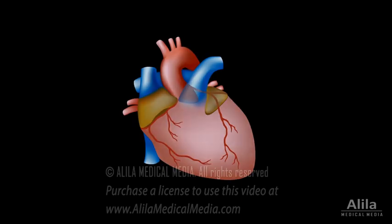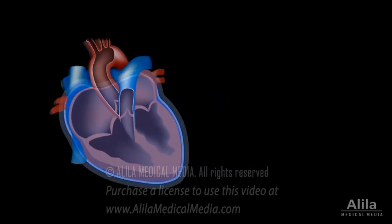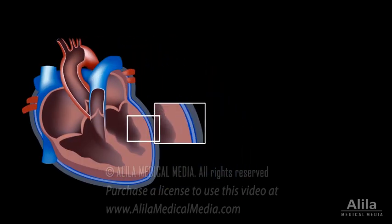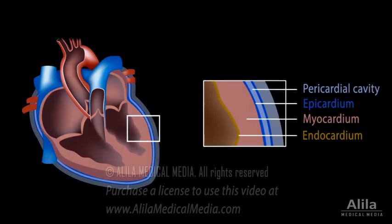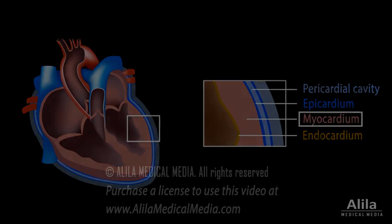The heart is enclosed in a double-layered sac called pericardium. The pericardial cavity contains a lubricant fluid. The heart wall has three layers: epicardium, myocardium, and endocardium. Myocardium is the muscle tissue responsible for the beating of the heart.